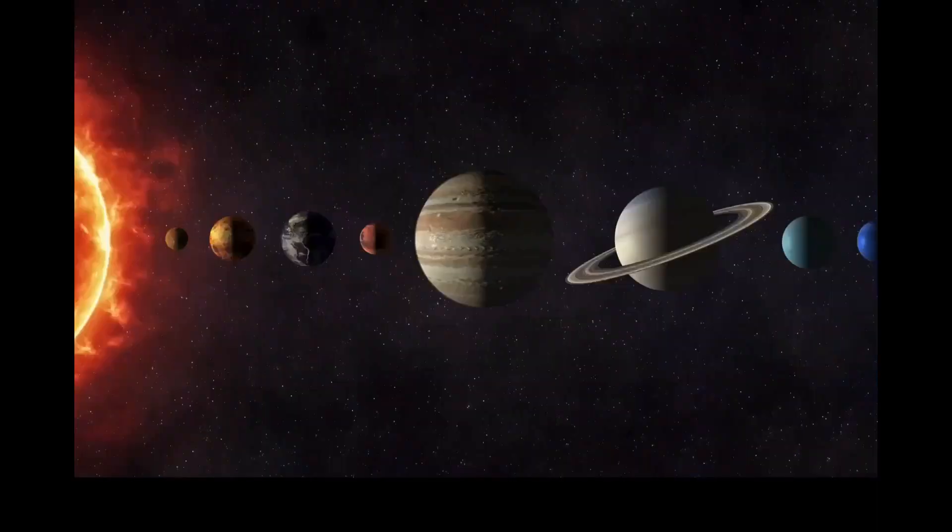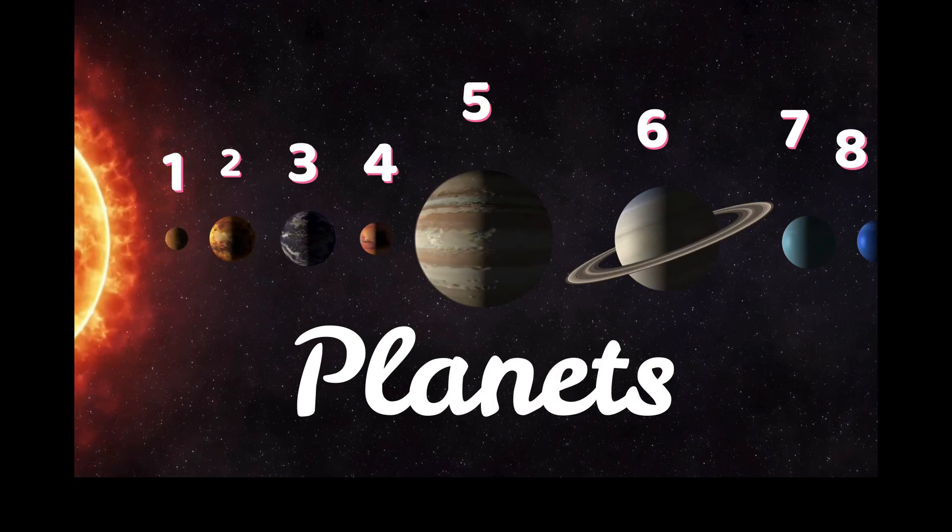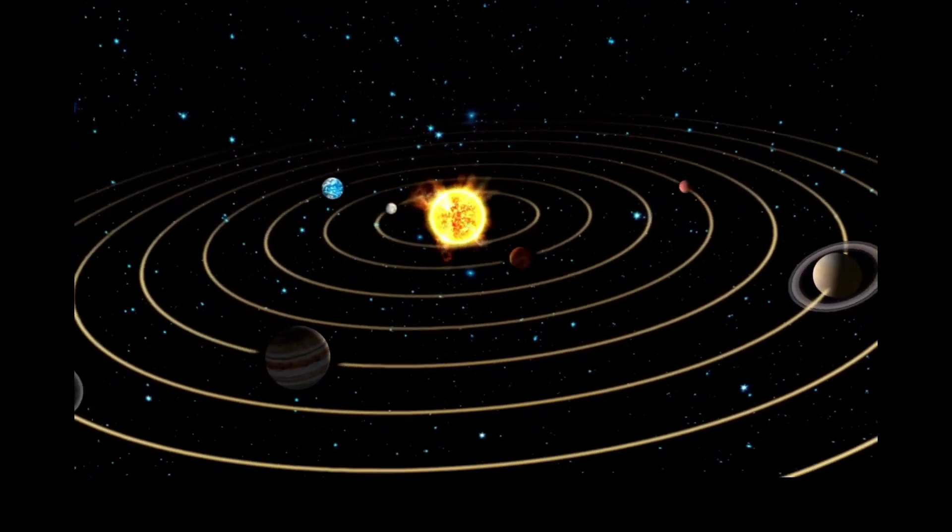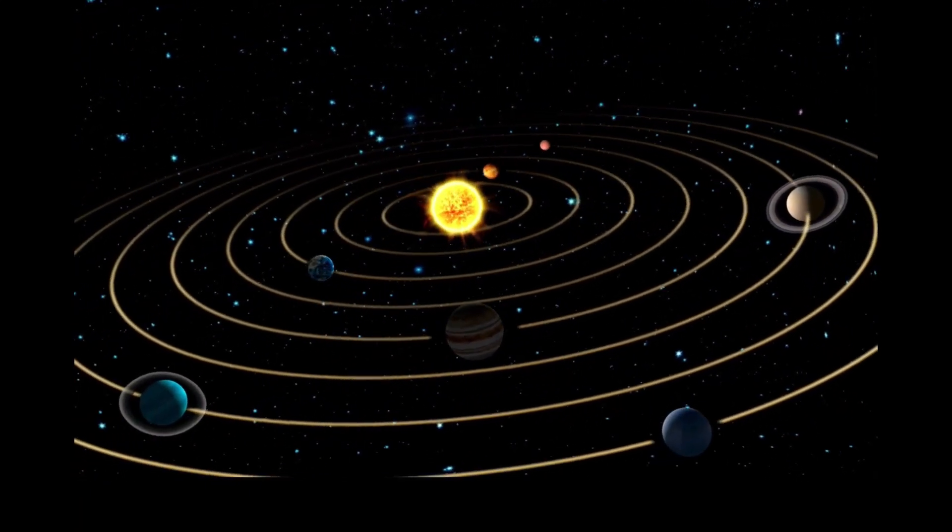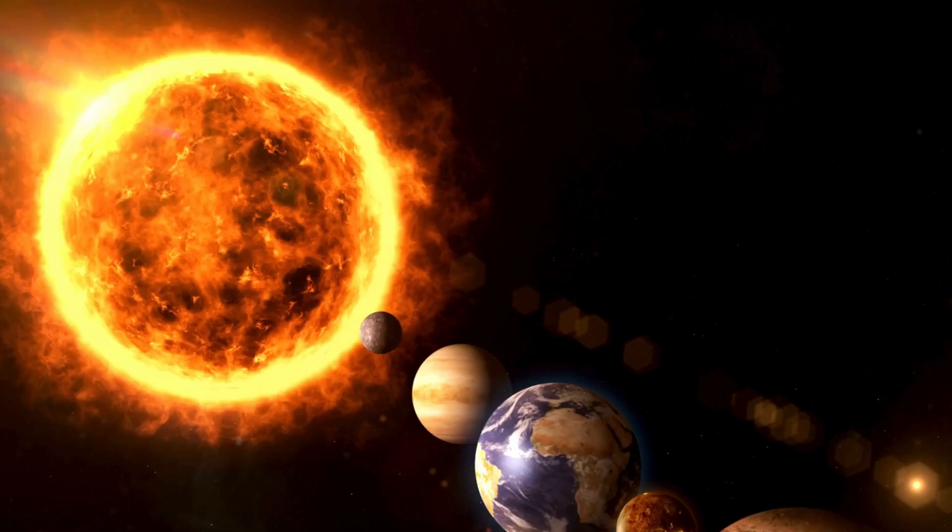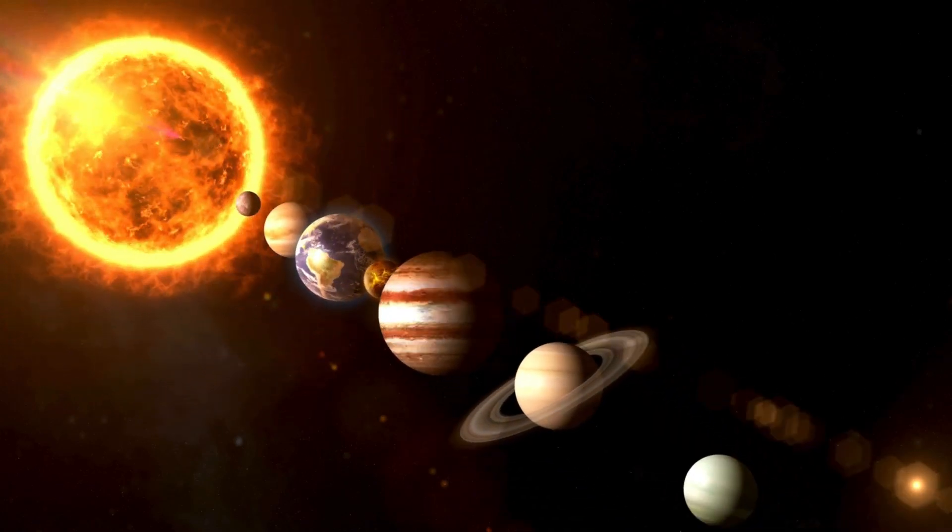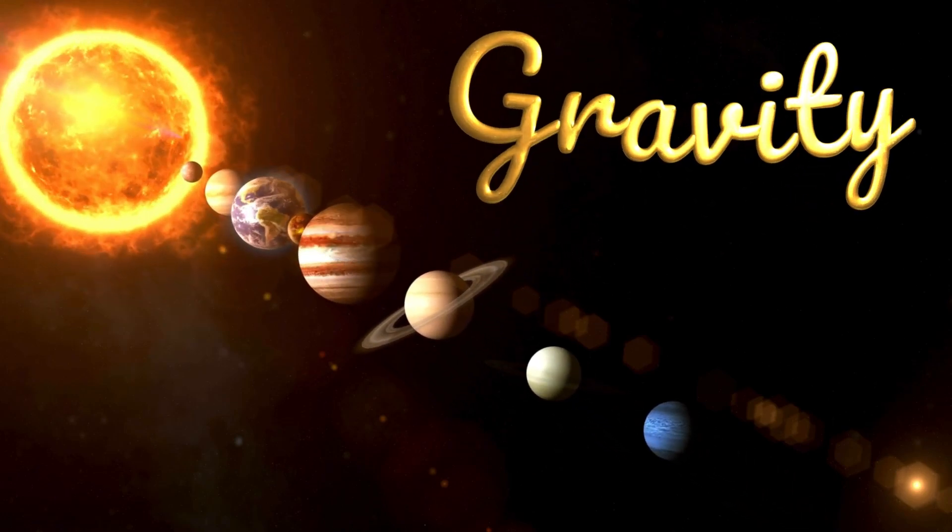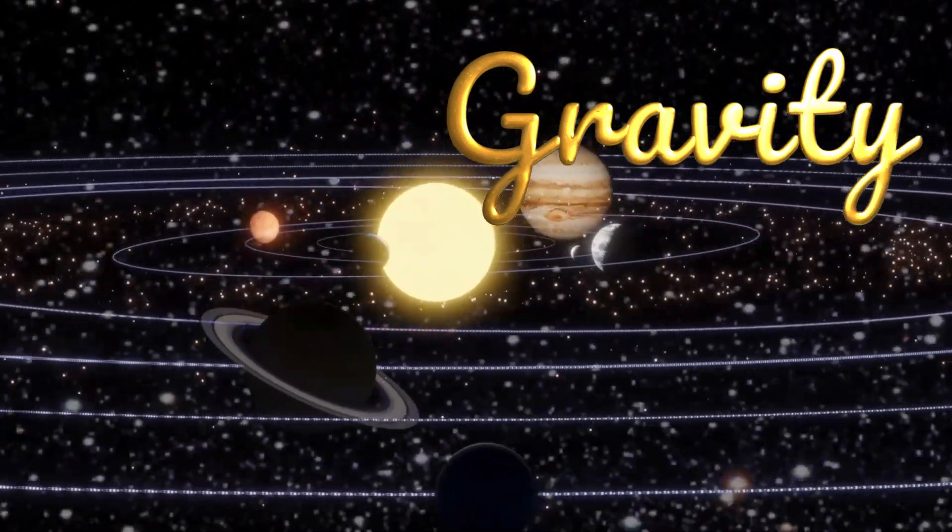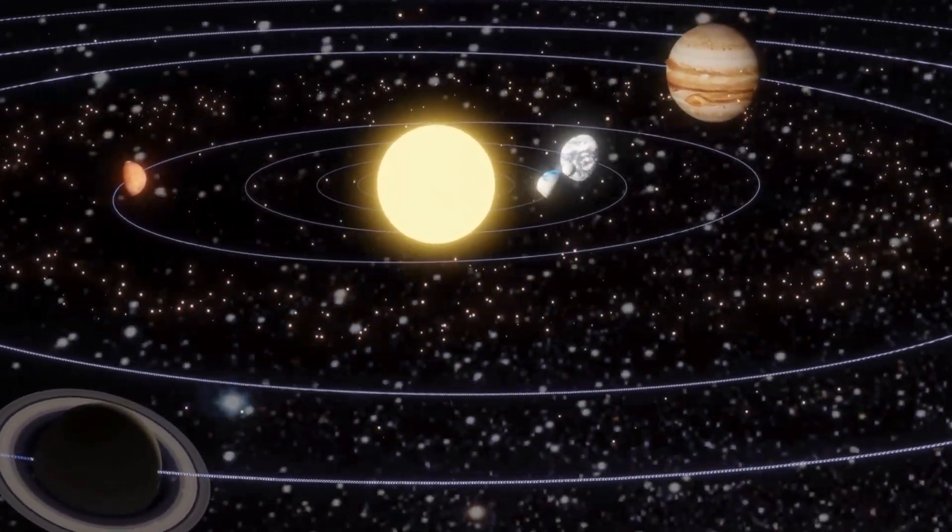Within our solar system, we have eight planets that go around the sun, that revolve around the sun. And Earth is one out of the eight planets that go around the sun. All of the eight planets orbit around the sun. Why? Because of gravity.